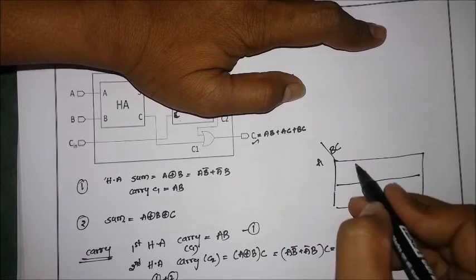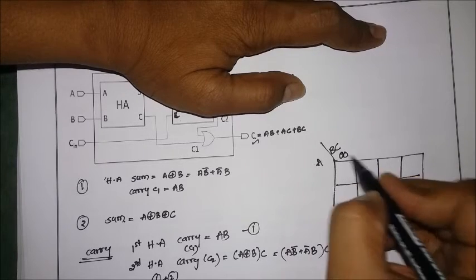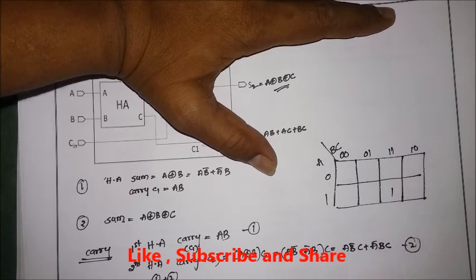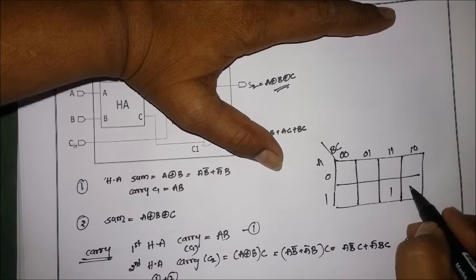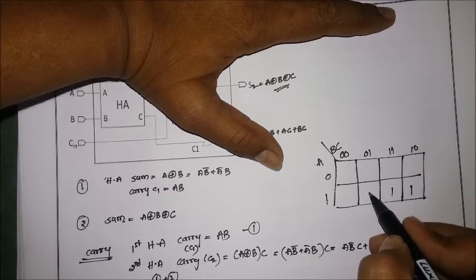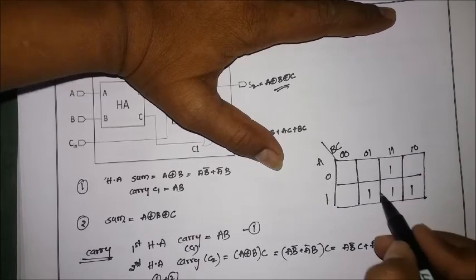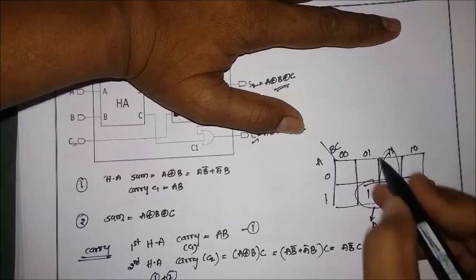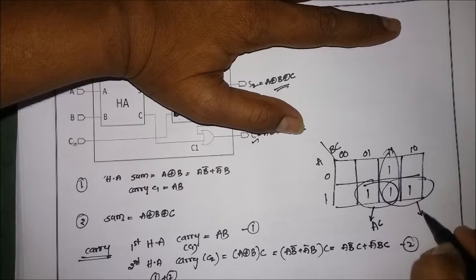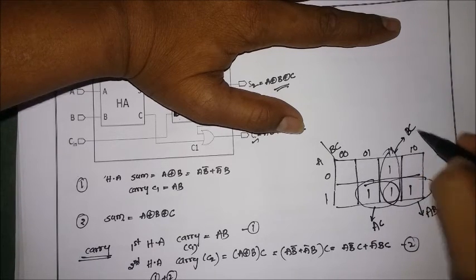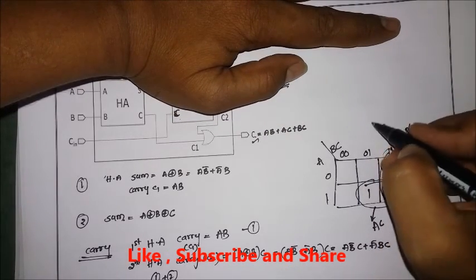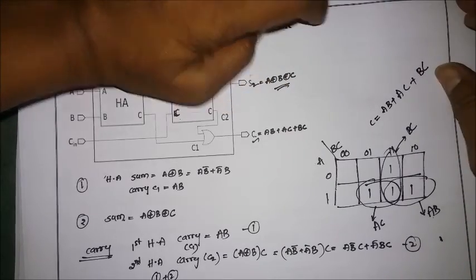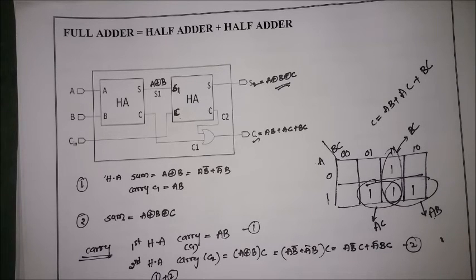Placing the minterms in the K-map for variables A, B, C: the minterms ABC (1,1,1), ABC̄ (1,1,0), AB̄C (1,0,1), and ĀBC (0,1,1) are mapped. Grouping these two and these two and these two as done previously gives us AC, AB, and BC respectively. So the full carry equals AB + AC + BC.